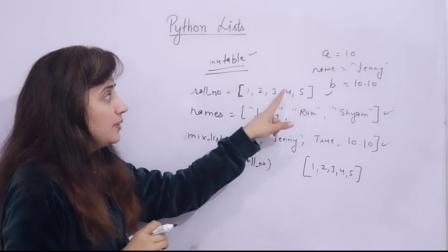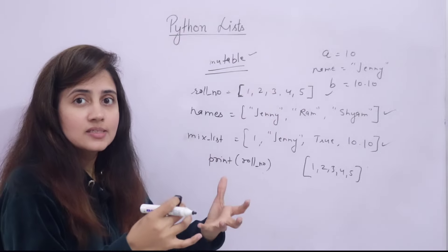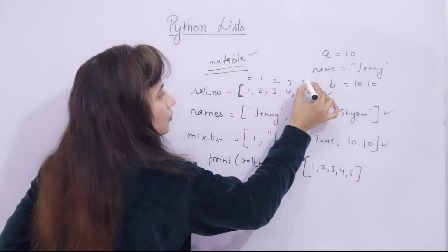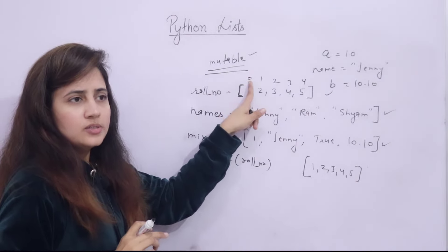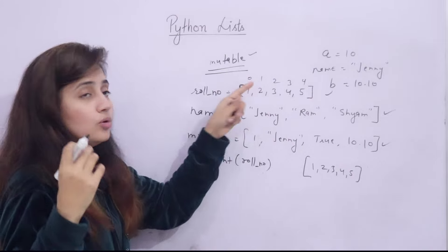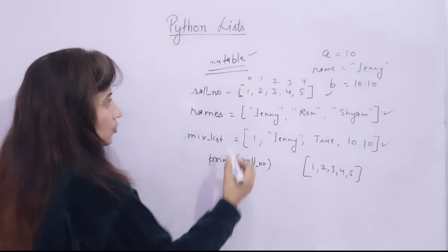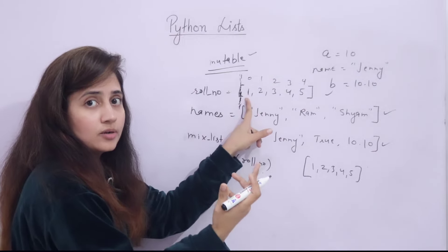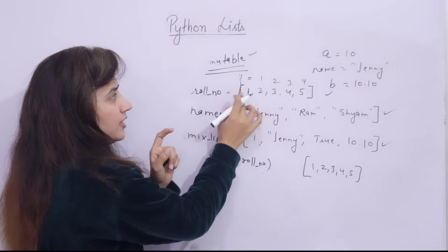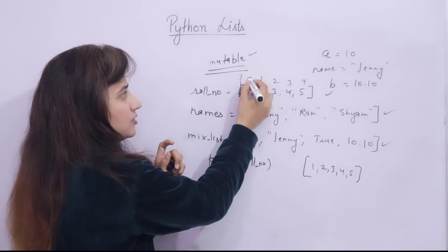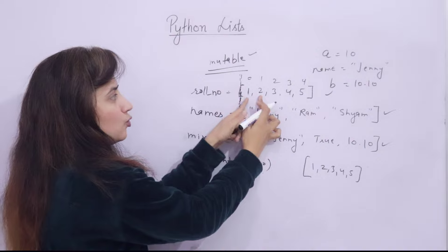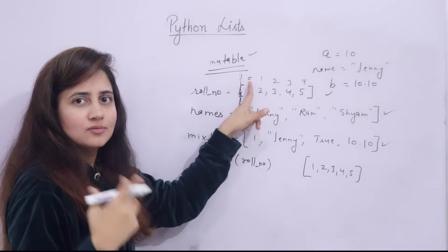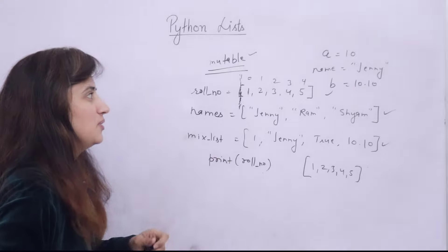But if you want to access individual elements — suppose I want to access element 3 — that is also possible using index. Index starts from 0, so indices are 0, 1, 2, 3, 4. Why from 0? It is not a position, it is an offset from the starting position. So the offset of the first variable from starting is 0, that is why index is 0. Shifting of the next is 1, then 2, then 3, then 4. That is why index generally starts in programming from 0 — for programmers, counting starts from 0.